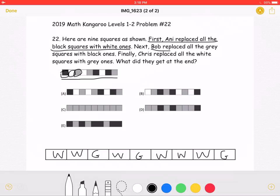Next, Bob replaced all the gray squares with black ones.